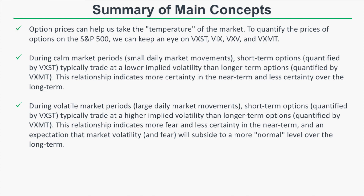During volatile market periods, or large daily market movements, short-term options as quantified by VXST typically trade at higher levels of implied volatility than longer-term options as quantified by VXMT. This relationship indicates more fear and less certainty in the near-term, and an expectation that market volatility and fear will subside to a more normal level over the long-term. You don't have to look at all four indices, but using more than one gives you a better picture of overall market sentiment via longer-term versus shorter-term option prices.